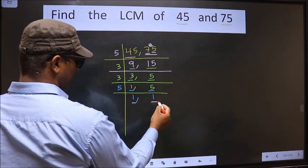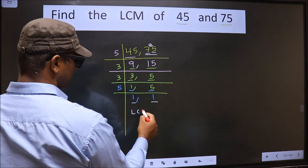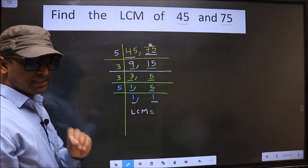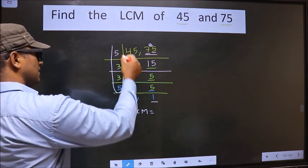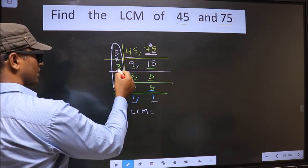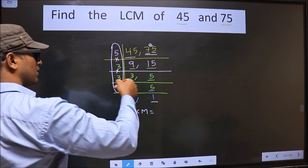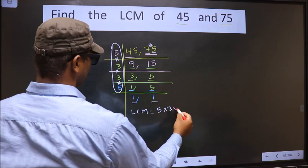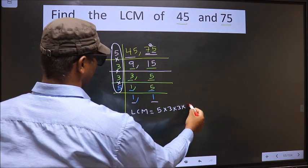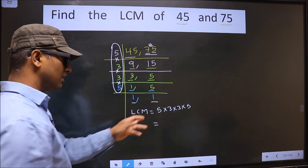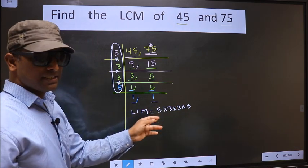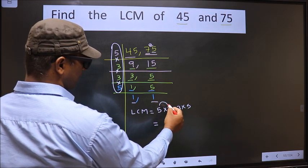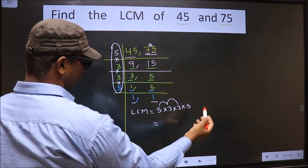We got 1 in both places, so our LCM is the product of these numbers. That is 5 into 3 into 3 into 5. So now let us multiply these numbers: 5 into 3 is 15, into 3 is 45, into 5 is 225. So 225 is our LCM.